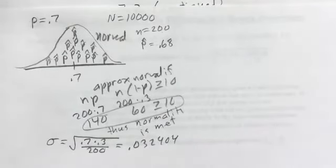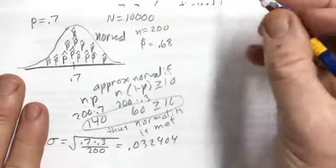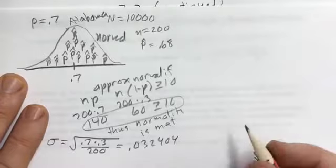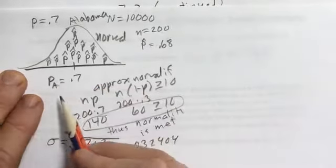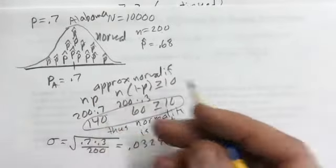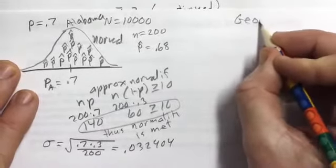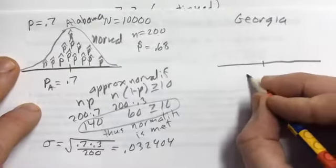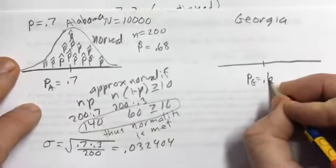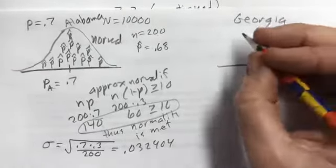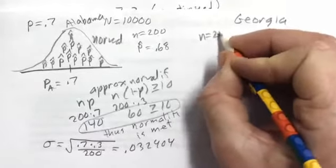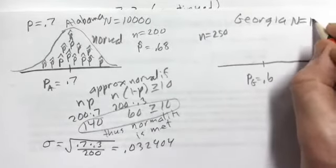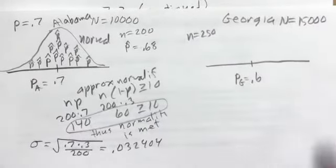Now in this section, we have two populations. Let's say one is the Alabama franchise of this office supply company, where the proportion of satisfied customers P_A equals 0.7. And let's say there's another franchise in Georgia, where the proportion of satisfied customers P_G equals 0.6. In Georgia they don't know this, so they take a sample of size 250. The Georgia franchise has 15,000 customers, so our sample is not more than 10% of the population.